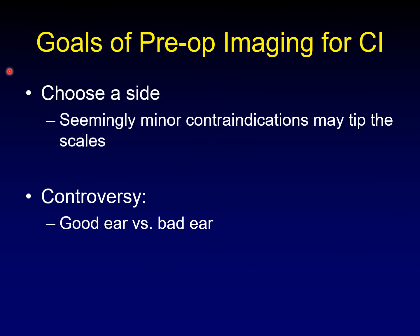In summary, the goals of preoperative imaging for cochlear implantation are to help the surgeon choose a side. Often it's more or less a coin toss, so seemingly minor contraindications may tip the scales. There is substantial controversy about whether the implant should go in the good ear — maximizing the outcome — or the bad ear — preserving what residual hearing remains in the better ear. Over the course of my career I've seen this pendulum swing back and forth. Either way, the information from the radiologist is critical in choosing an ear during preoperative cochlear implant imaging.